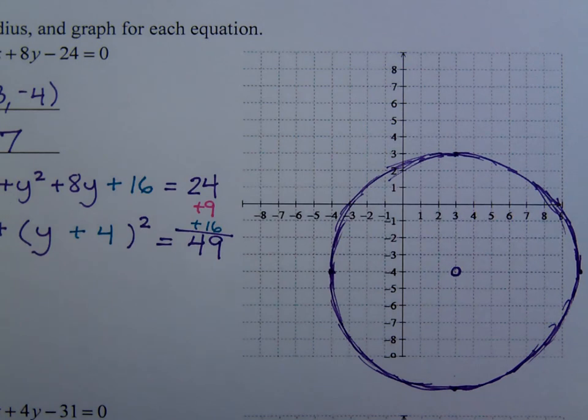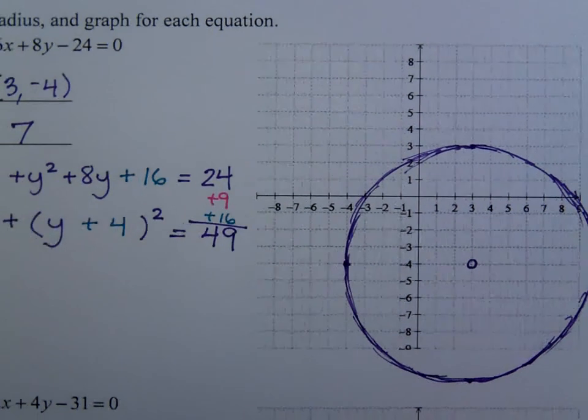All right, so in the comments section you may use the word janky to describe that circle. Sorry about that. Let's do this again. Let's try another example.